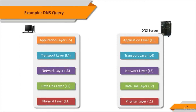The data unit transferred between two endpoints has different names in each layer. In layers 5, 6, and 7 — the application layers — it's called data. In layer 4, the transport layer, it's called segment for TCP and datagram for UDP. In layer 3, the network layer, it's called packet. In layer 2, the data link layer, the data unit is called frame. The speaker generally uses 'packet' for the transferred data unit in each layer to make it less complicated.